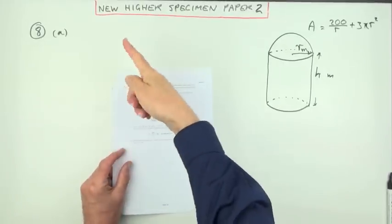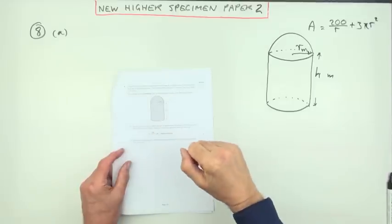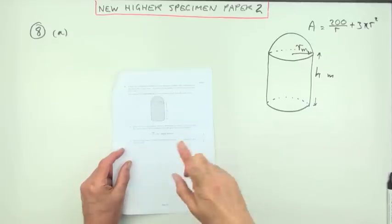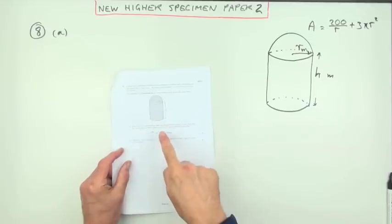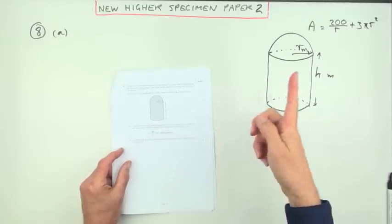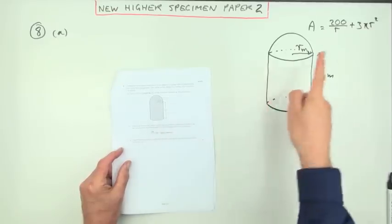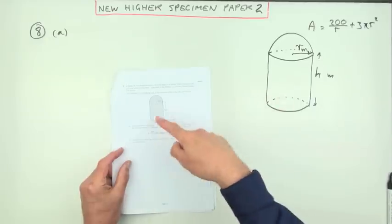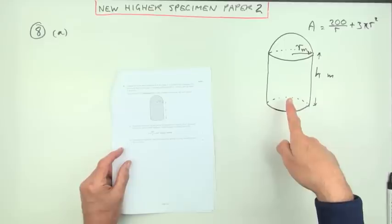Number eight, from this new higher specimen paper two. It's an optimization question. It's split into two parts. In the first part, you have to derive this expression that you have to optimize, and in part B you have to optimize it.